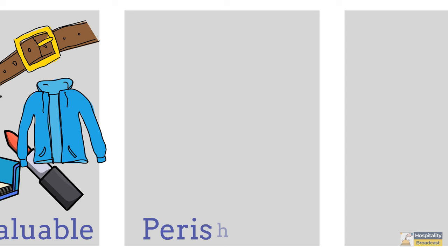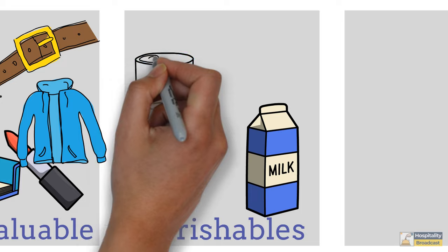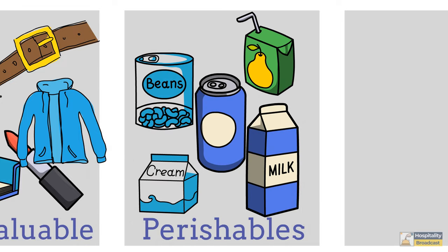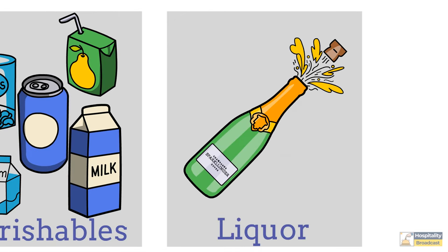Third is perishable items having very short shelf-life such as dairy products, food items, soft beverages. The last category, we have liquor or alcoholic beverages.